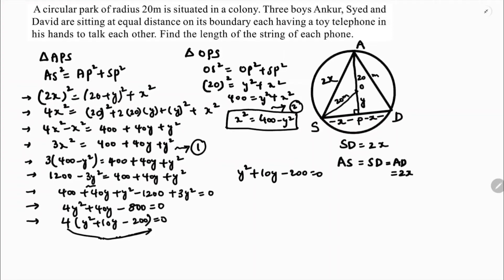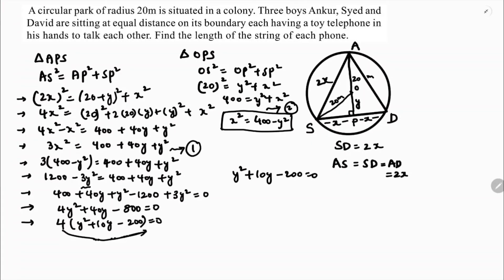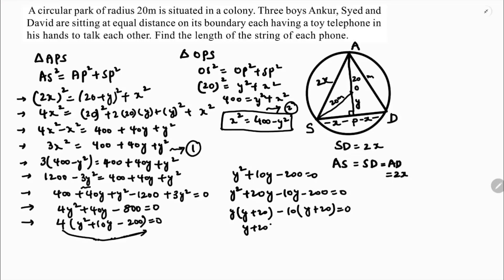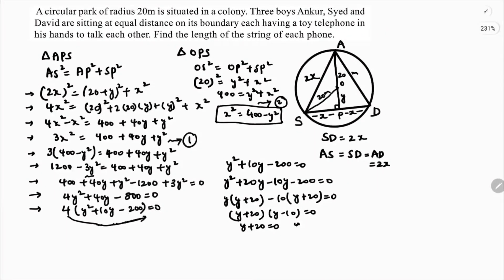Dividing by 4: Y² plus 10Y minus 200 equals 0. Factoring: Y² plus 20Y minus 10Y minus 200 equals 0, giving Y(Y + 20) minus 10(Y + 20) equals 0, so (Y + 20)(Y minus 10) equals 0. Therefore Y equals minus 20 or Y equals 10. Since Y cannot be negative, Y equals 10.